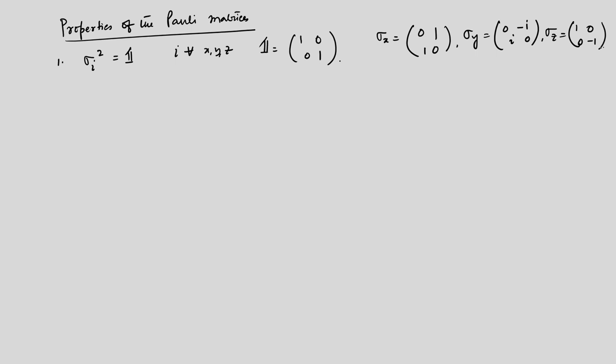By convention σ_z is diagonal, while σ_x and σ_y are off-diagonal. If you diagonalize σ_x, then σ_y and σ_z become off-diagonal. Any matrix can be diagonalized, but we carry on with this standard notation.